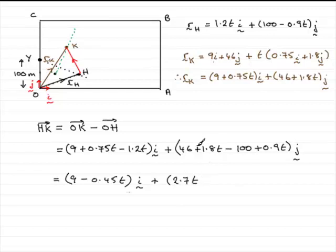And then we've got 46 minus 100, which is minus 54. And that's going to be in the j direction. And that's the vector HK in meters. And that's what we had to show.